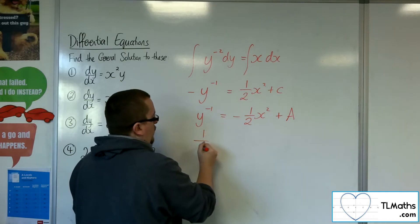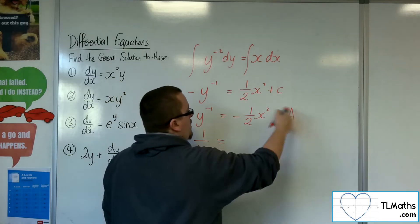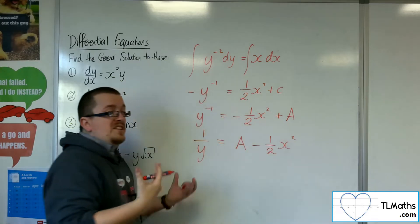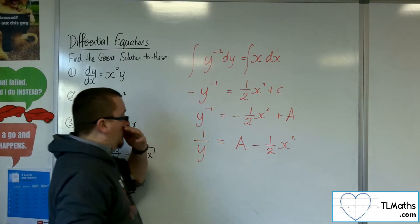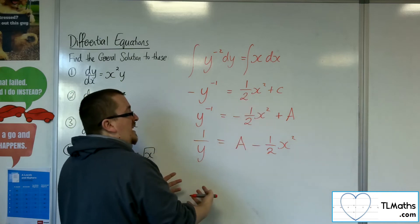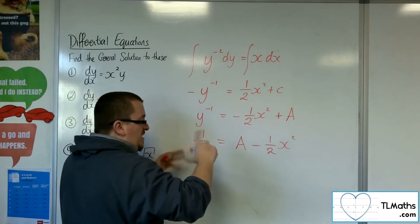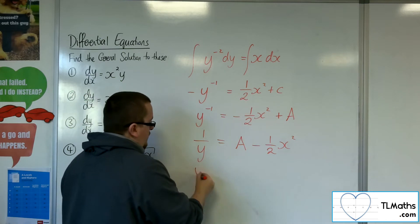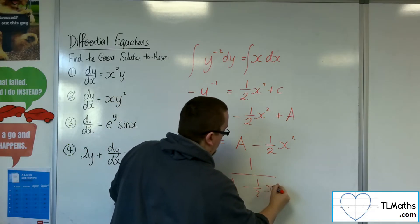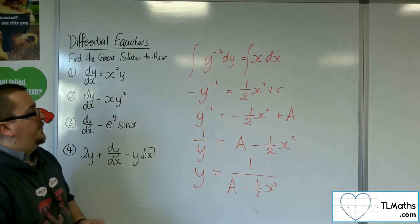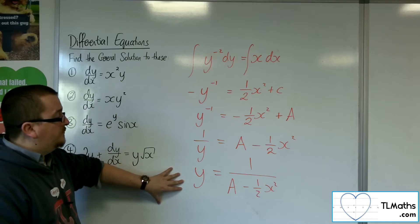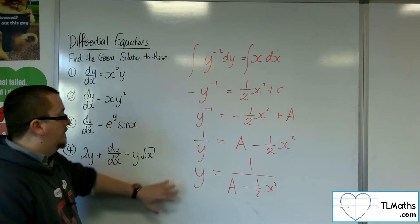Now, y to the minus 1 is just 1 over y. I'm going to rearrange that, reorder it rather, so that I've got it that way around. It's neater. It looks nice. It's easier to work with. And then I could multiply both sides by y, divide both sides by the a minus 1 half x squared, or reciprocal both sides. So it's y equals 1 over a minus 1 half x squared. So although that's my general solution, that's an easier one to work with as a solution.